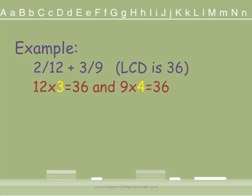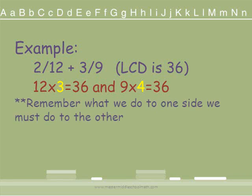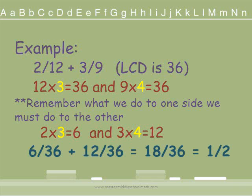We multiply 12 times 3 to give us 36, and 9 times 4 to give us 36. Whatever we do to one side we must do to the other, so we multiply our numerators by the same amount: 2 times 3 equals 6, and 3 times 4 equals 12. We rewrite our fractions: 2 twelfths becomes 6 over 36, and 3 ninths becomes 12 over 36. We add our numerators: 6 plus 12 gives us 18, so our answer is 18 over 36. Is there a number that goes into both evenly? Yes — 18 divides into itself once and into 36 twice. Our fully reduced answer is one half.